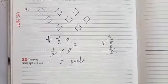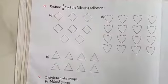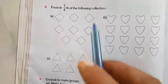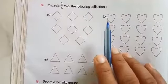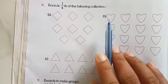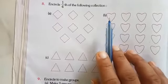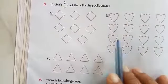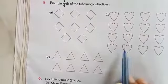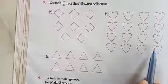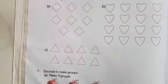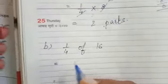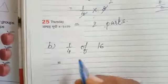Now we will see the second question. Here, how many hearts are there? 1, 2, 3, 4, 5, 6, 7, 8, 9, 10, 11, 12, 13, 14, 15, 16. So out of 16, we need to find one-fourth part. That means we do 1 by 4 of 16.